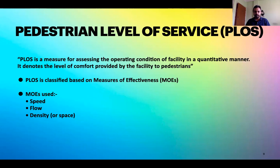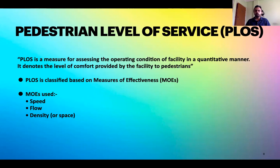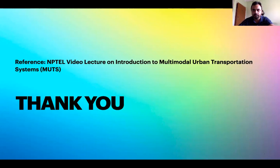PLOS is classified based on various parameters known as Measures of Effectiveness (MOEs). The MOEs considered for PLOS are speed, flow, and density of pedestrians. These are counted and calculated, and then PLOS is determined. So, measures of effectiveness are the factors — speed, flow, and density — on which PLOS is classified. I hope all of you have got a brief idea of pedestrian level of service.